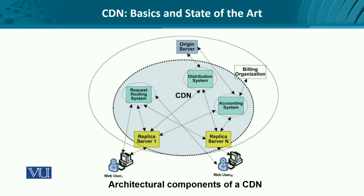The architectural components of a CDN at a very basic form include users, the user making requests to the request routing system, which in turn refers the user to a replication server. The replication server is a mirrored outsourced site for the original content coming from the origin server via a distribution system. And of course, we need a billing and accounting mechanism.